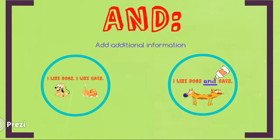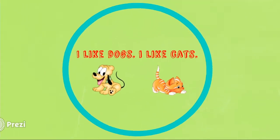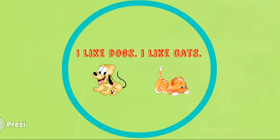So our first conjunction is and. The conjunction and is used to join two similar ideas or to add additional information to a sentence. In our first example, we are talking about two similar subjects, animals, dogs and cats.